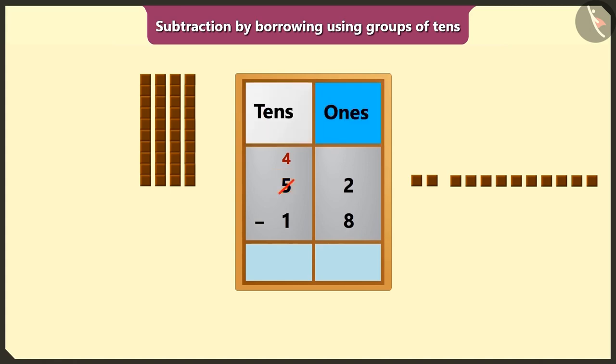Now in the box of ones, it will be 1 borrowed tens equal to 10 ones. Now it will be 2 ones plus 10 ones, meaning 12 ones in the box of ones.